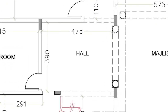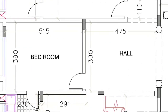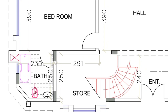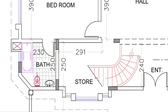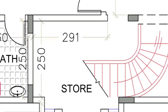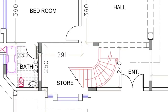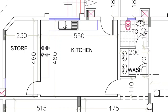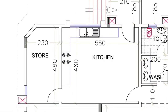This is the hall 390 by 475, and this is the guest bedroom 515 by 390 on the ground floor. This is the attached bathroom 230 by 290, and this is our stair and under-stair store 250 by 290. Then we are getting a wide kitchen 460 by 550, and this is our store 460 by 230 cm.